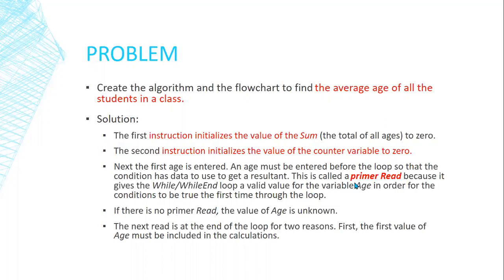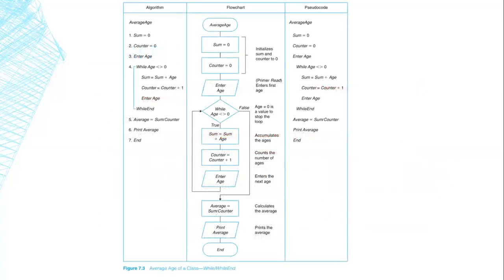We read before the condition, so the condition will depend on the age. If it's valid, the loop will keep going until we enter an invalid age, then it will stop. The second thing is the next read will be placed before the end of the loop for two reasons: before we add it to the sum, because it's at the end of the loop it will go back to the condition. If the age satisfies the condition, then we add it to the sum; if not, we exit the loop.